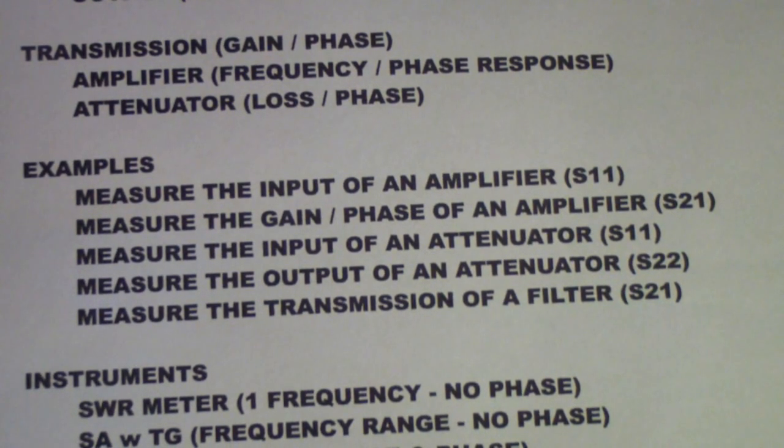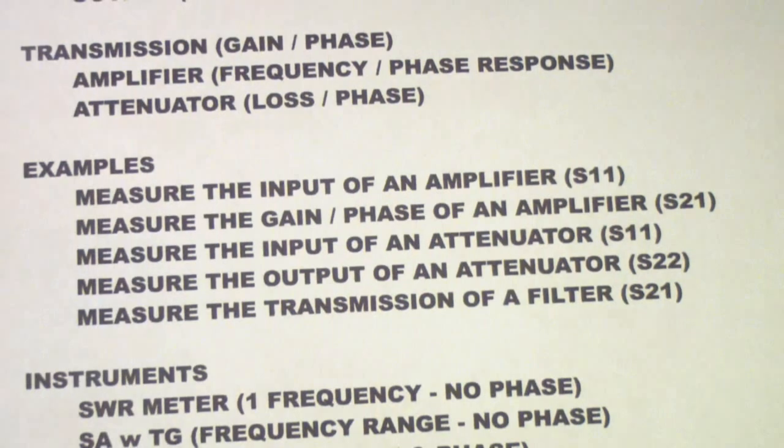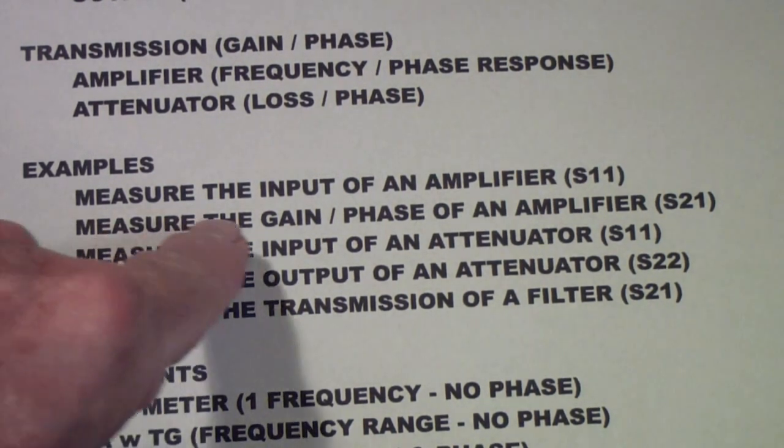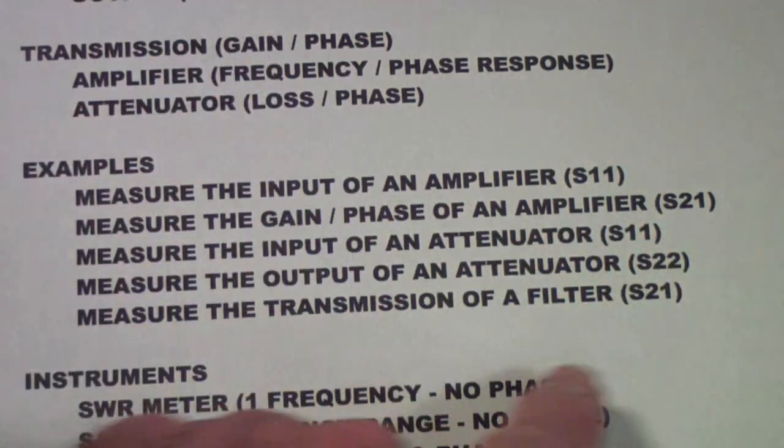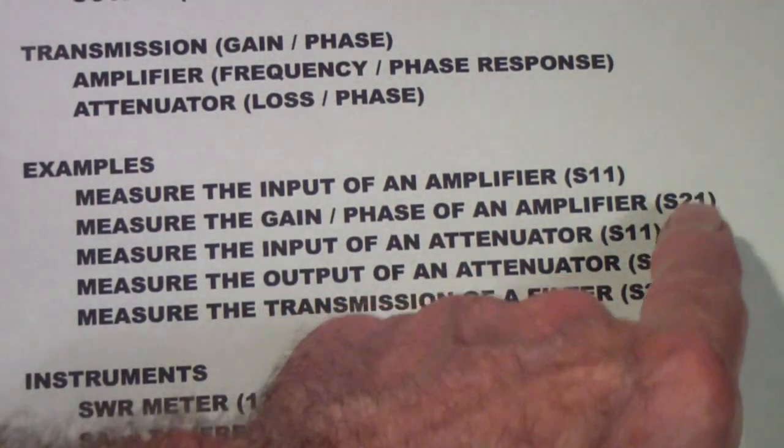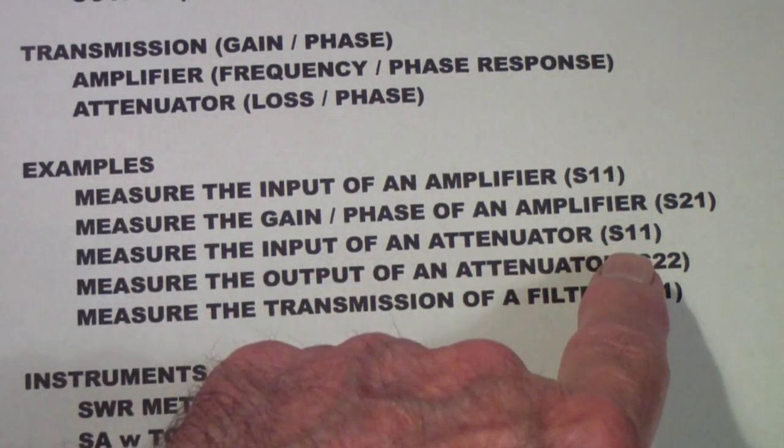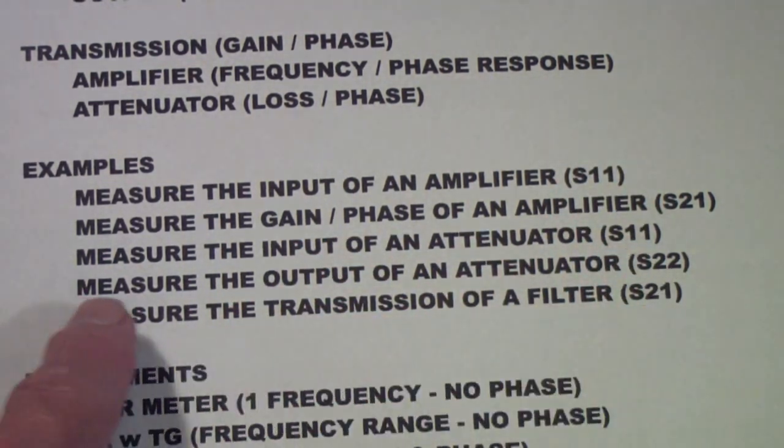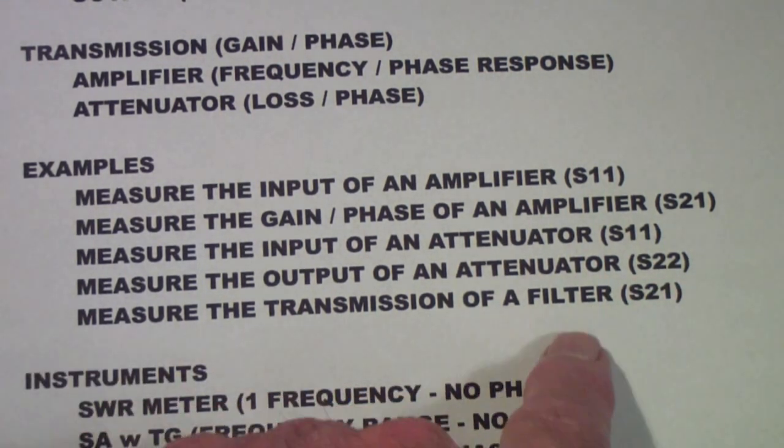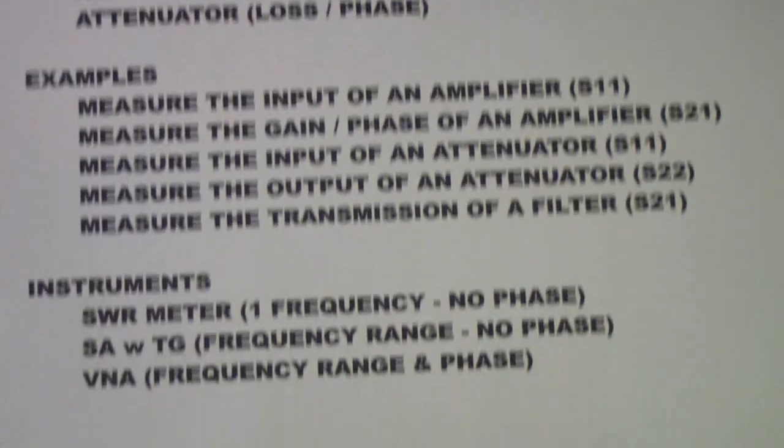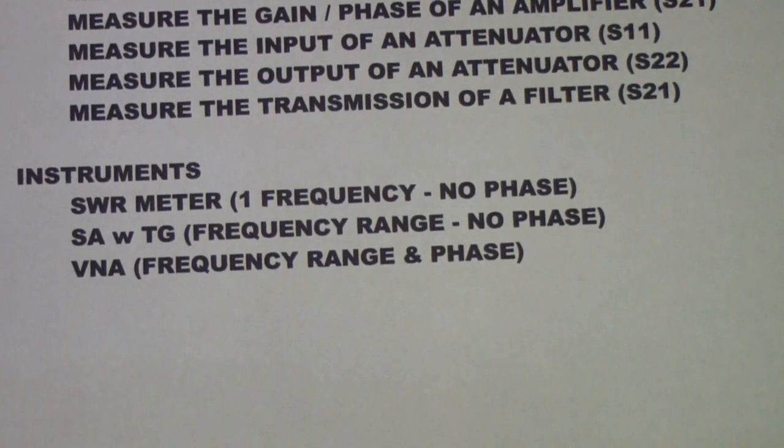So here are some examples of things that you might want to measure. You might want to measure the input of an amplifier, normally what you're interested there is called S11. Now S11 is simply a measure, don't worry about defining it, we'll talk about that in a future part. The second thing you might want to do is measure the gain and phase of an amplifier, we talked about that a minute ago, and that is called S21. The input of an attenuator, once again S11. The output of an attenuator, S22. The transmission of a filter, S21.